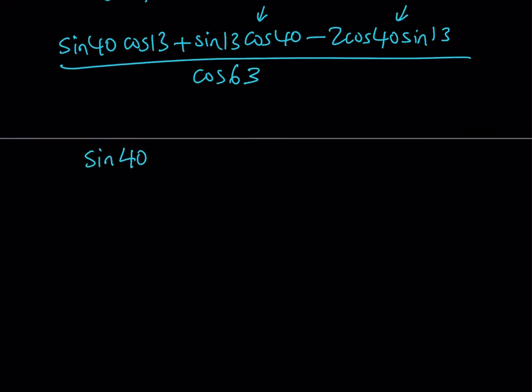Once we simplify we can write it as sine 40 cosine 13 minus sine 13 cosine 40. And the whole thing is going to be divided by cosine of 63 degrees.